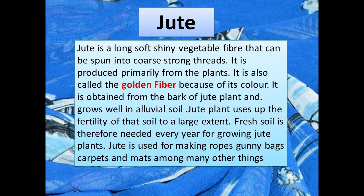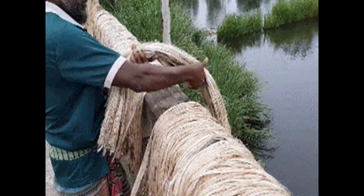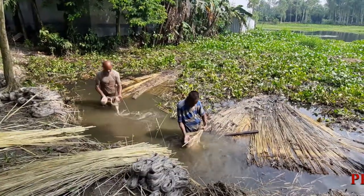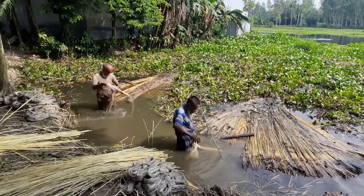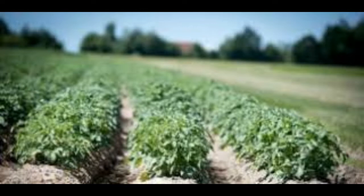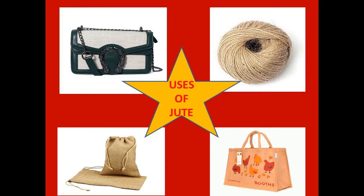Next is jute, a plant product. Jute is a long, soft, shiny vegetable fiber that can be spun into coarse, strong threads. It is also known as golden fiber because of its color. Jute is separated from the bark of the jute plant — the bark is first dried and then processed. The best soil for jute is alluvial soil, as jute takes a lot of nutrients from the soil. Jute is used for making ropes, gunny bags, carpets, and mats.